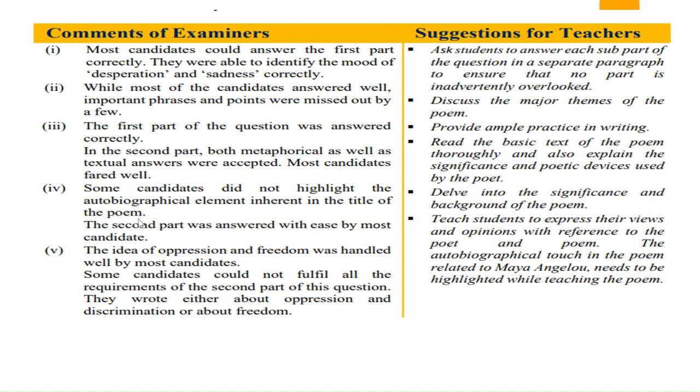So you have to remember, if this question repeats, that Maya Angelou is linked to the title's importance. The fifth question: the idea of oppression and freedom was handled well by most candidates. Some candidates could not fulfill all requirements of the second part. They wrote either about oppression and discrimination or about freedom. You had to delve into all the aspects which were there in that extract: two lines of free bird perspective, caged bird perspective, African American perspective, white American perspective. All aspects you had to write, metaphorically and literal meaning also.